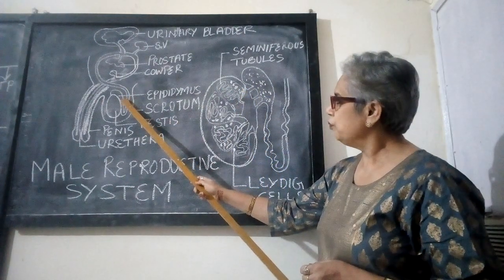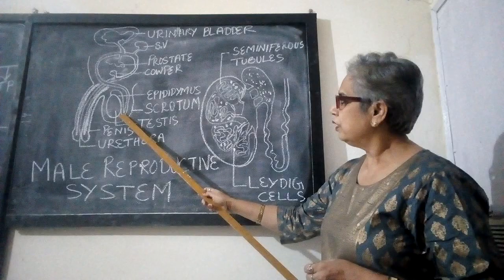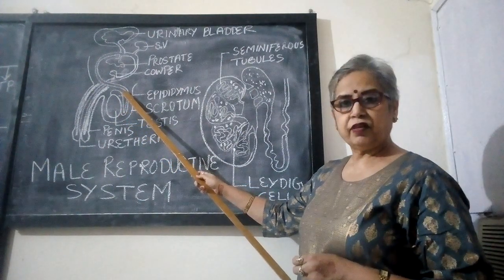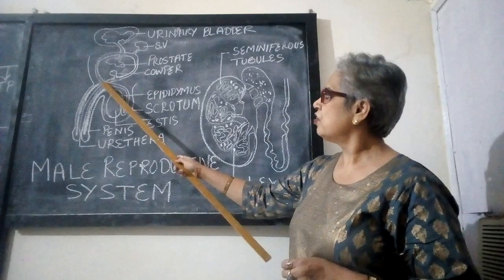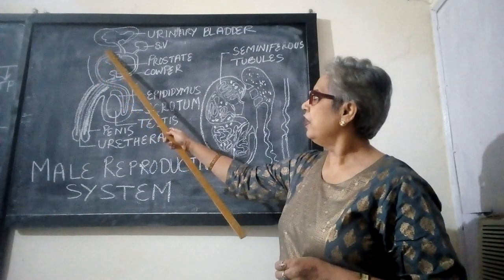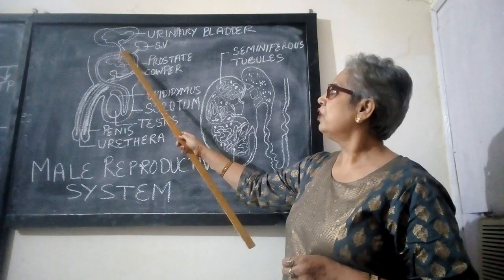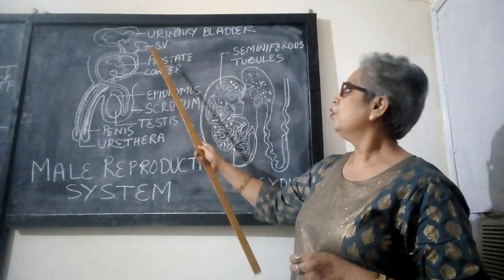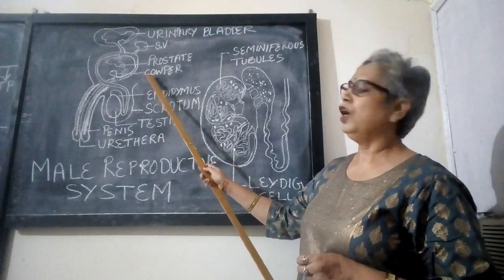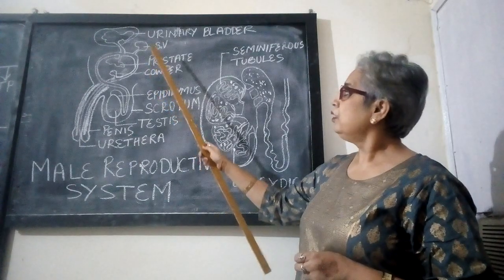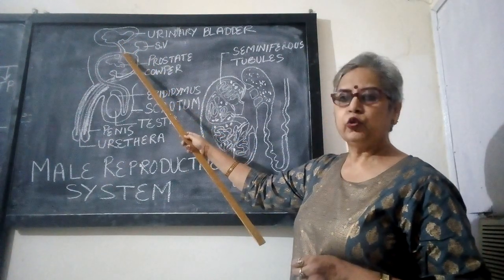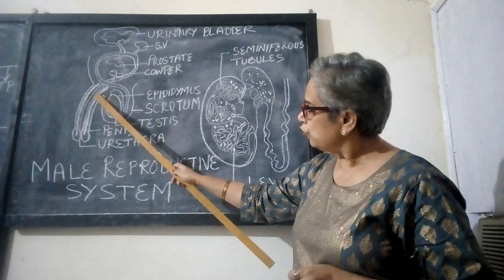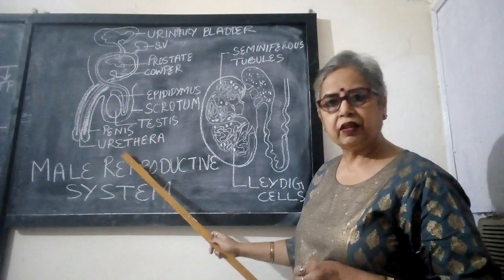From the epididymis, the sperms enter into a tube-like structure called the vas deferens and it ascends up. While ascending, it receives secretions from the seminal vesicles, prostate gland, and Cowper's gland. It also receives urine from the urinary bladder, and then it continues into the tube called the urethra.